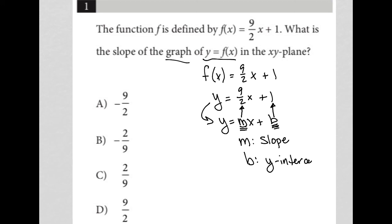This particular question is simply asking us what the slope is. So it's asking us what m is equal to. So we know that m is 9 halves. So that means the answer must be choice D.